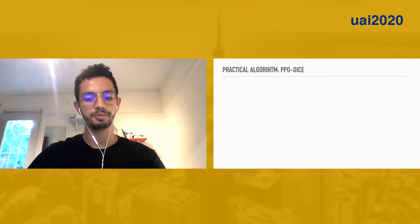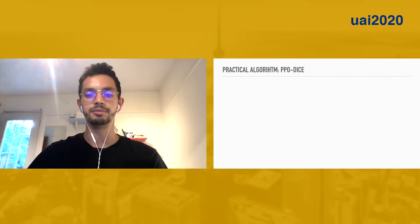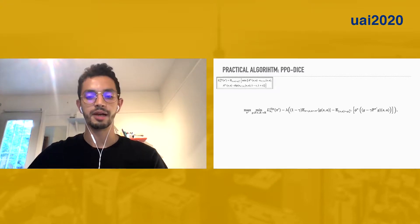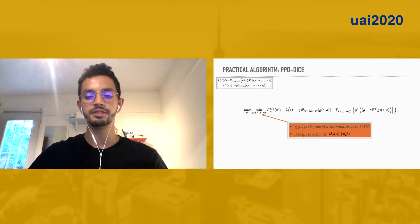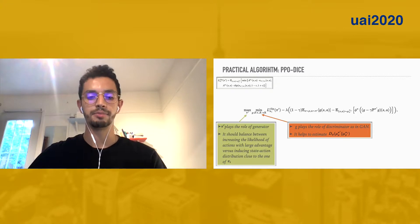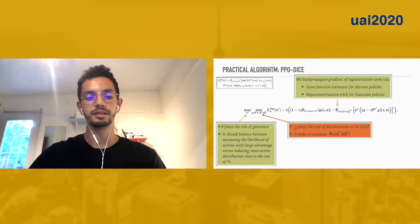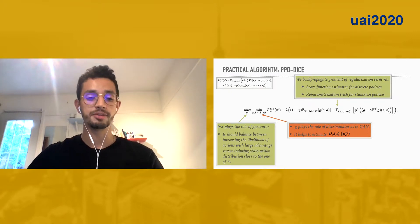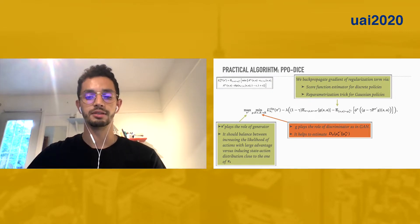Our practical algorithm, which we call PPO-DICE, optimizes the following min-max objective, where g plays the role of the discriminator as in a GAN, and pi-prime plays the role of the generator. To back-propagate the gradient of the regularization term with respect to the policy, we can use a score function estimator for discrete policies or a reparameterization trick for Gaussian policies.